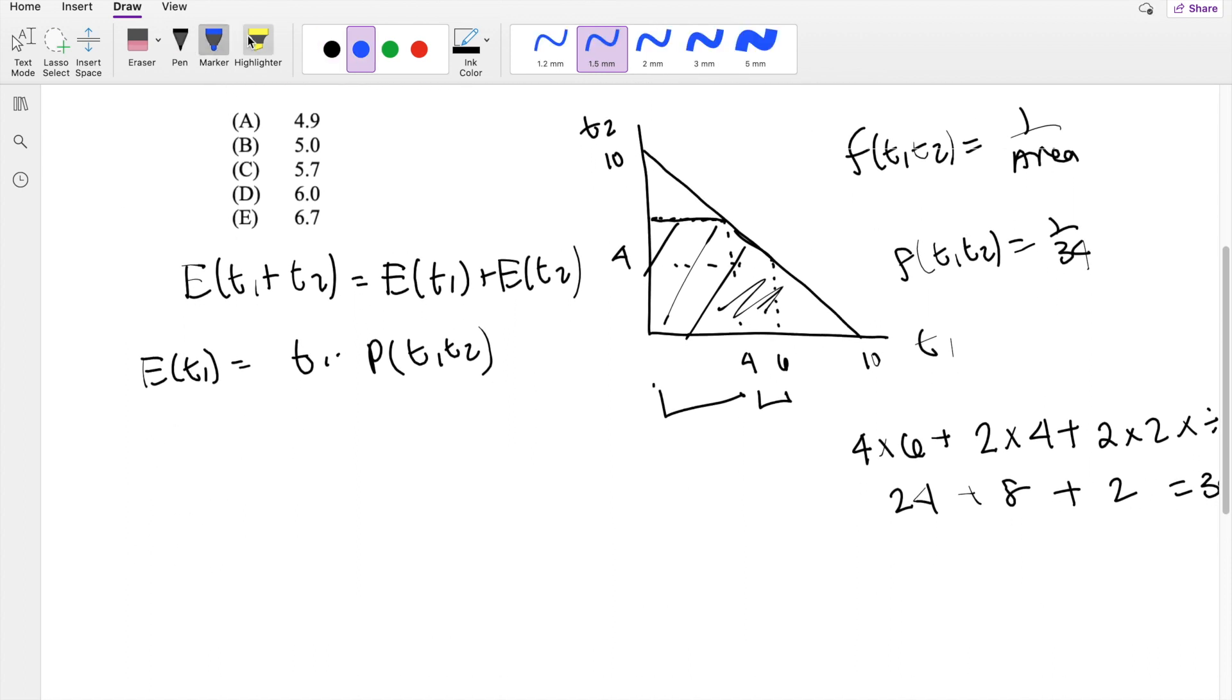So I'm actually going to integrate in respect to dt2 first, so going this way. But notice, the dt2 for this one is different from the range for this one. As in, for the first blue line I drew, the dt2 is going from 0 to 6.